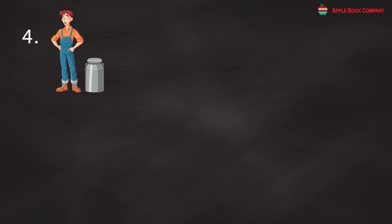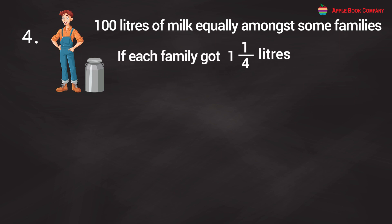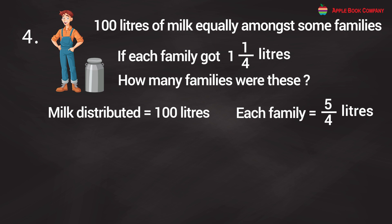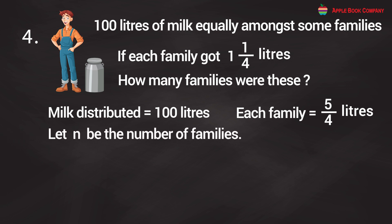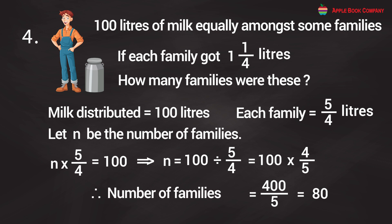Problem 4: A milkman distributed 100 liters of milk equally among some families. If each family got 1 and 1/4 liters (= 5/4 liters), how many families were there? Let N = number of families. N × 5/4 = 100, so N = 100 ÷ 5/4 = 100 × 4/5 = 400/5 = 80. Therefore, the number of families that received milk is 80.